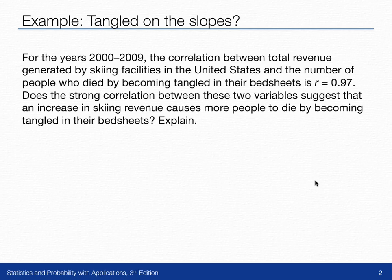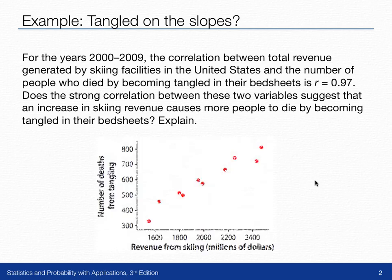That's very high. Does this strong correlation between these two variables suggest that an increase in skiing revenue causes more people to die by becoming tangled in their bedsheets? It doesn't seem like it should be. So let's take a look.